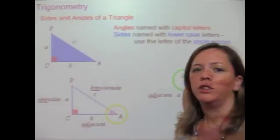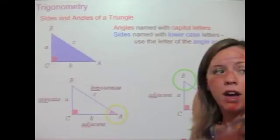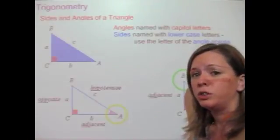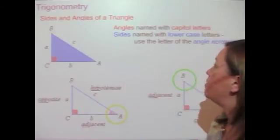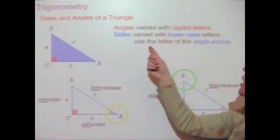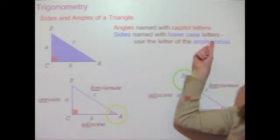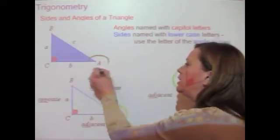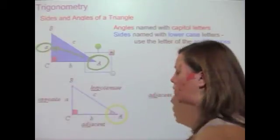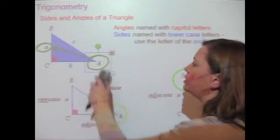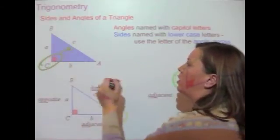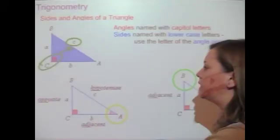Now let's talk about what you need to know about trigonometry. When you have a right triangle, you look at the relationship between the sides and angles. Angles are named with capital letters, sides with lowercase letters, and you always use the letter of the angle across from the side. So angle A has side a across from it, and angle C has side c across from it.